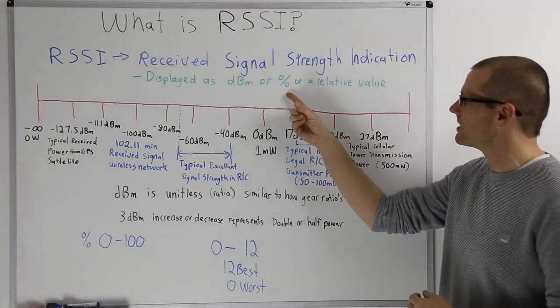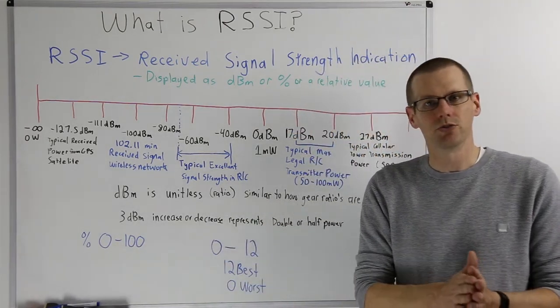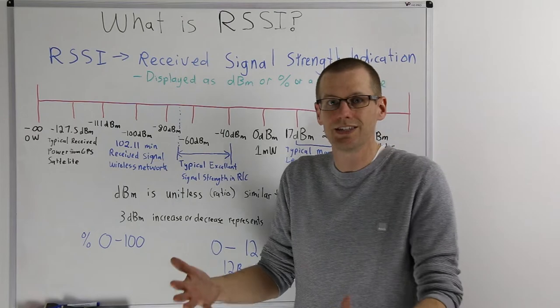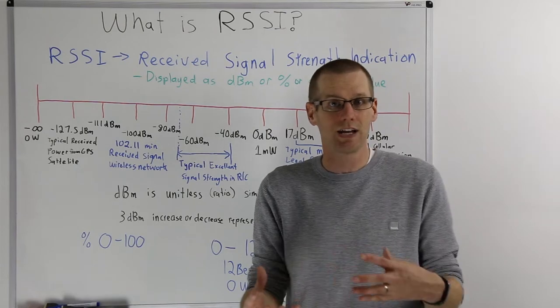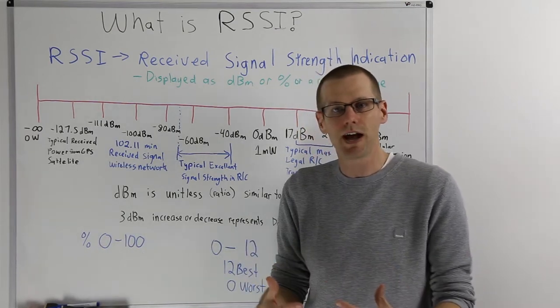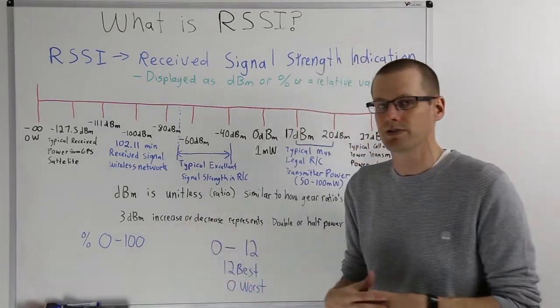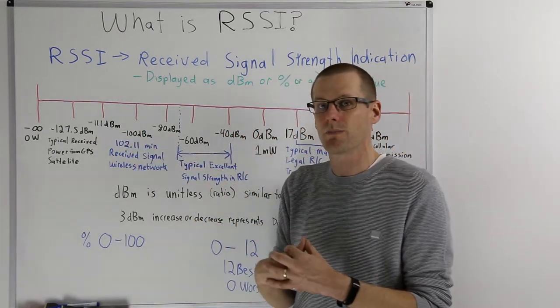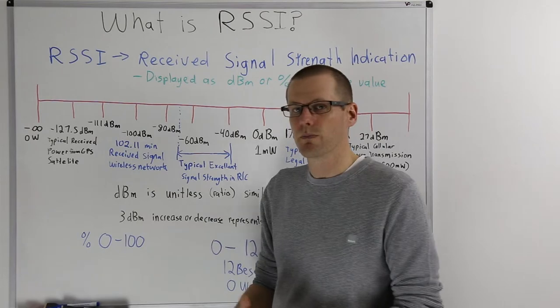So now let's move in and talk about percent or even a relative value. When we look at percent, you can imagine that percent would run from zero to 100. And you would know that at 100% signal strength, it sounds pretty good, and it probably is. And then at zero percent, you would expect that it's going to be extremely low, probably very bad. However, what is really important to know is this is not a measured value. This is a relative value that the manufacturer would have to set up on your specific system to represent it as a percentage.